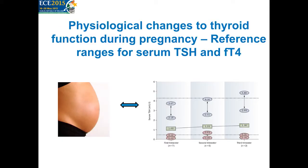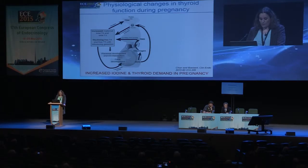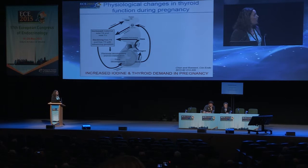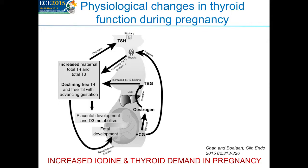Moving to the physiological changes to thyroid function in pregnancy: during the first trimester, HCG levels will be rising, and as a consequence of HCG, which has a mild thyrotropic action, you will get a stimulation of the thyroid gland with increased T3 and T4 production. A further consequence of the HCG rise is stimulation of estrogen and increased production of thyroxin-binding globulin in the liver, and therefore increased T3 and T4 binding, resulting in increased maternal total T3 and T4 and subsequently a decrease in pituitary TSH.